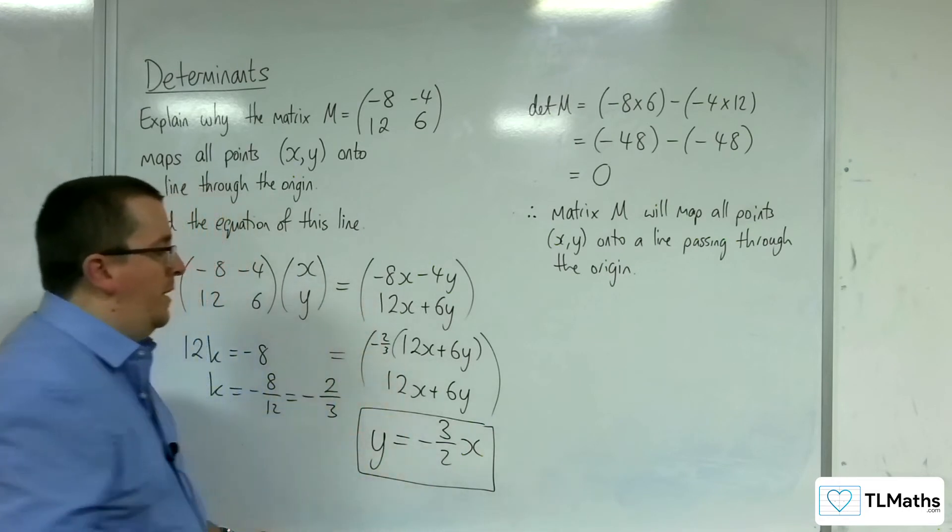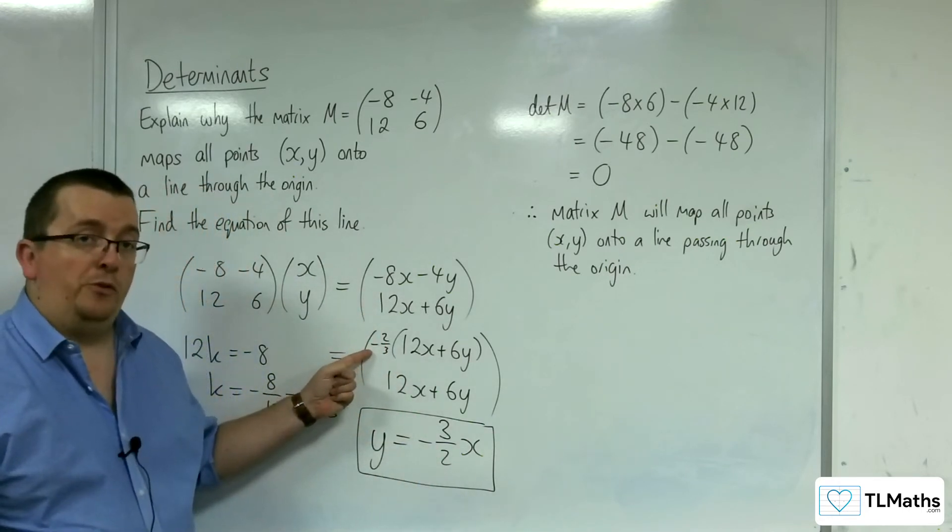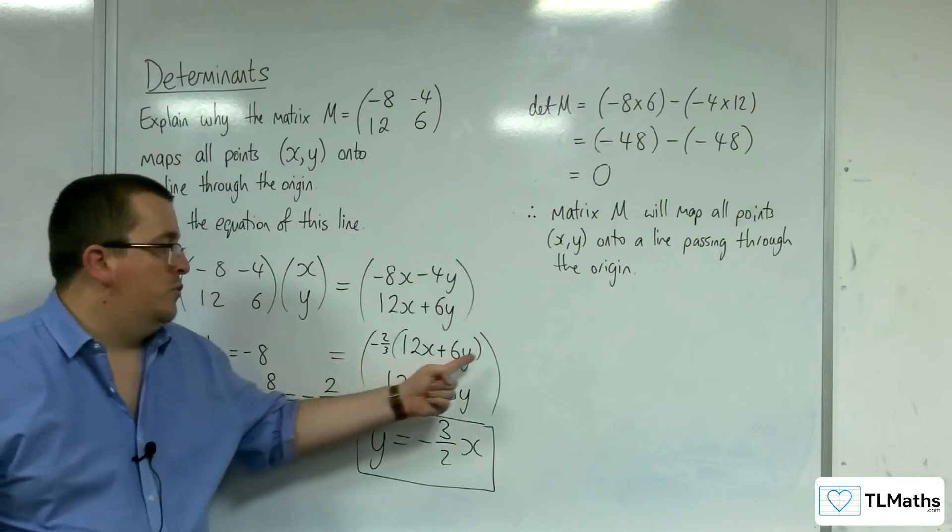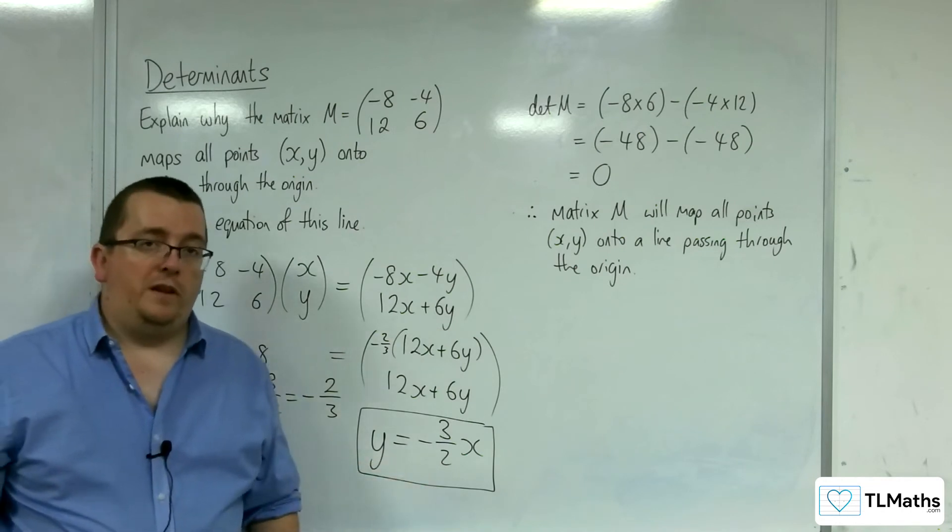Okay, not minus 2 thirds x, minus 3 halves x, because that's what I need to multiply that to get to that. y is equal to minus 3 halves of x. So, that is the equation of the line.